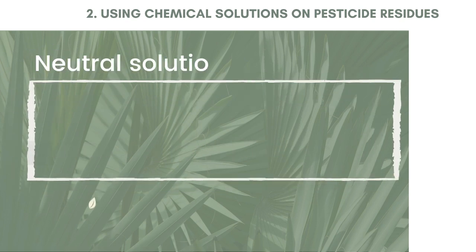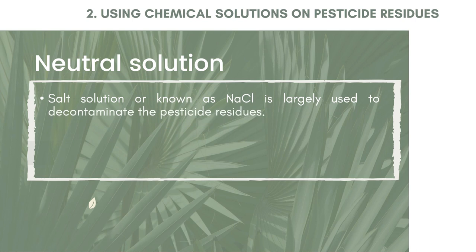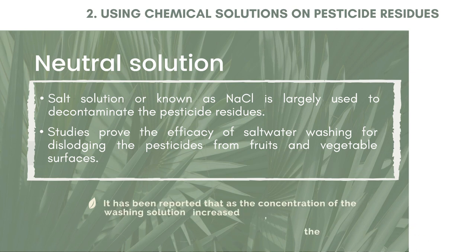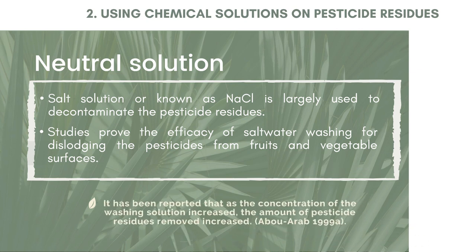Next, neutral solution — salt solution, or sodium chloride, is largely used to decontaminate pesticide residue. Studies prove the efficacy of salt water washing for dislodging pesticides from fruit and vegetable surfaces. It has also been reported that as the concentration of the washing solution increases, the amount of pesticide residue removed also increases.